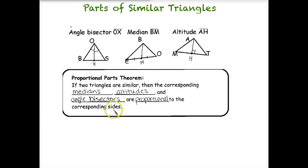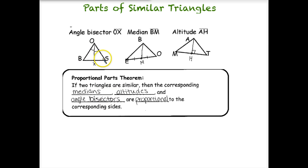So let's look at the parts of similar triangles, specifically our median, angle bisector, and altitude. Here's a drawing of each. Our proportional parts theorem states: if two triangles are similar, then the corresponding medians, altitudes, and angle bisectors are proportional to the corresponding sides.